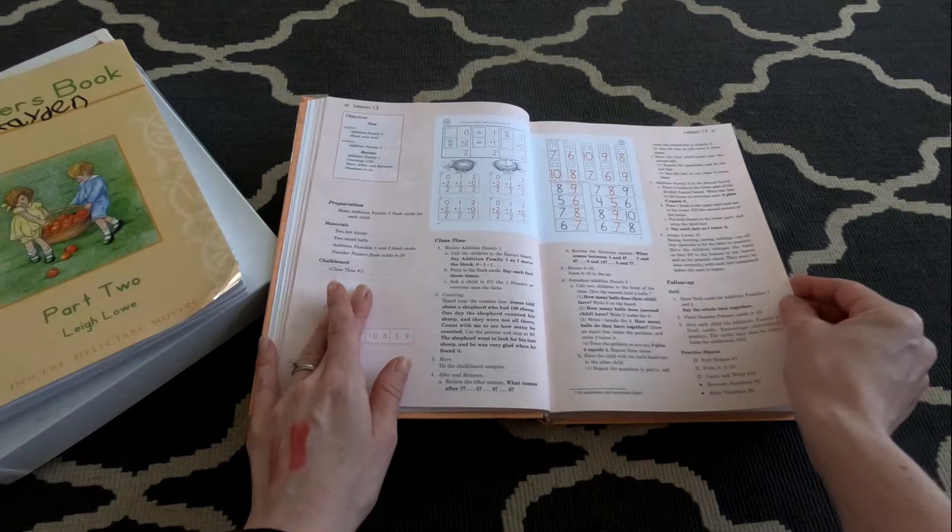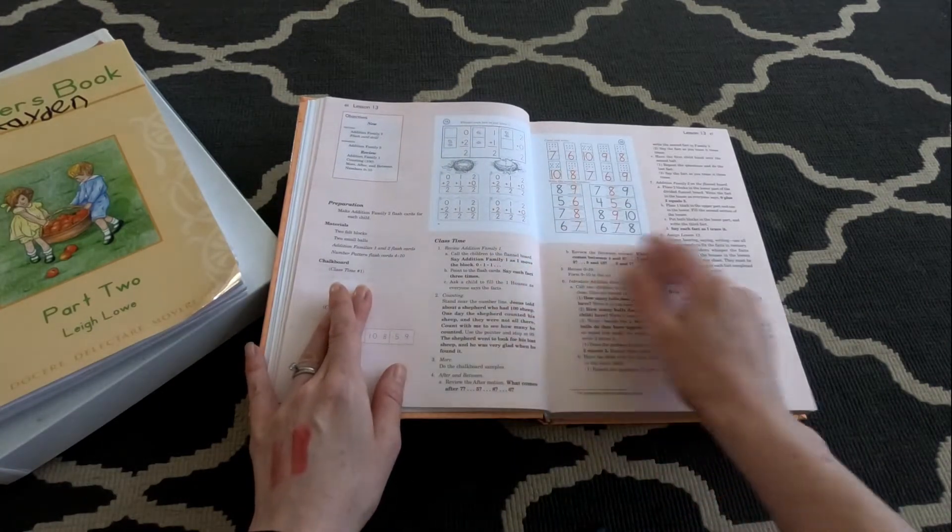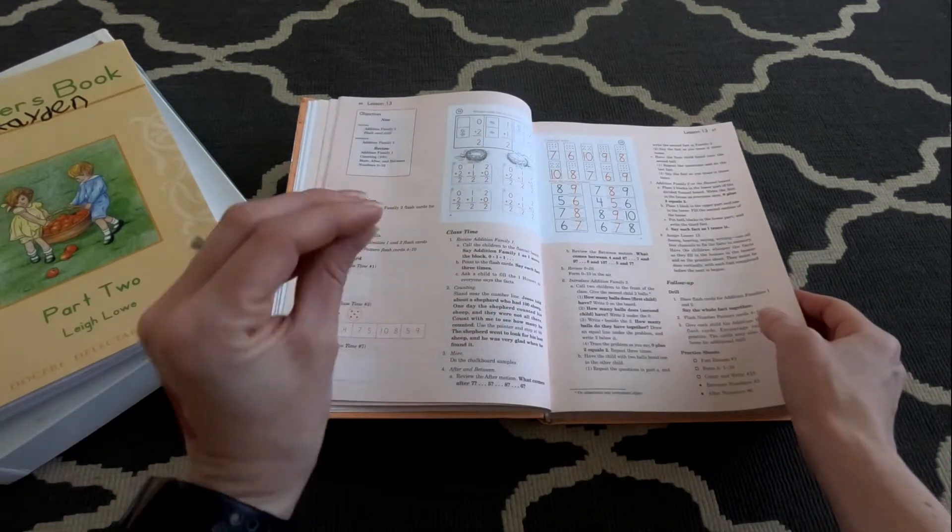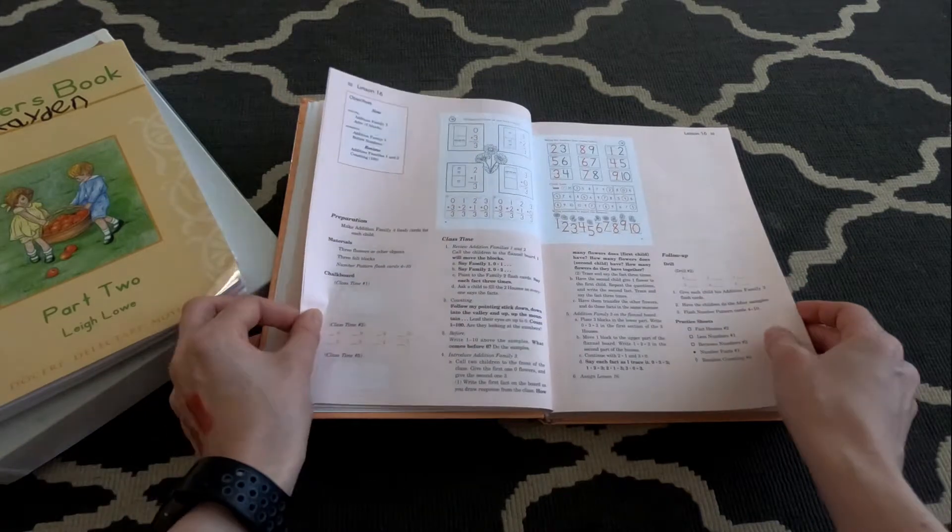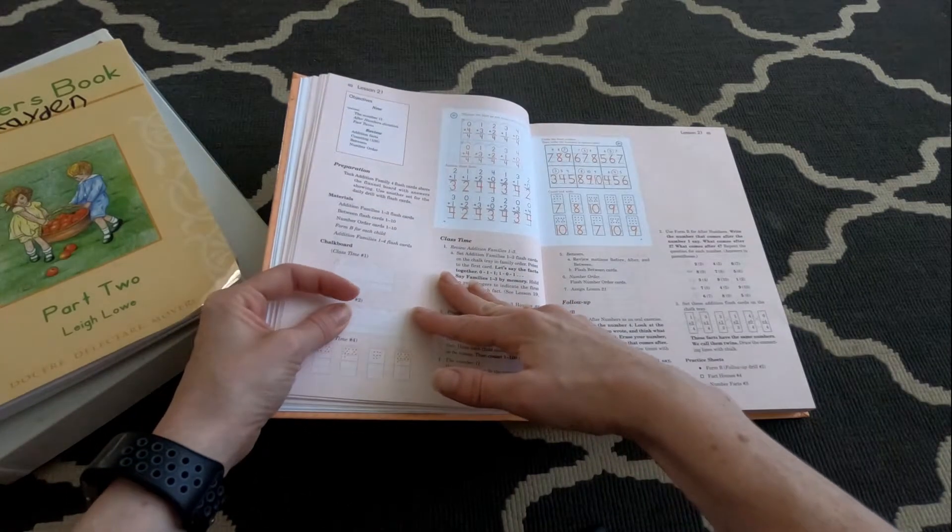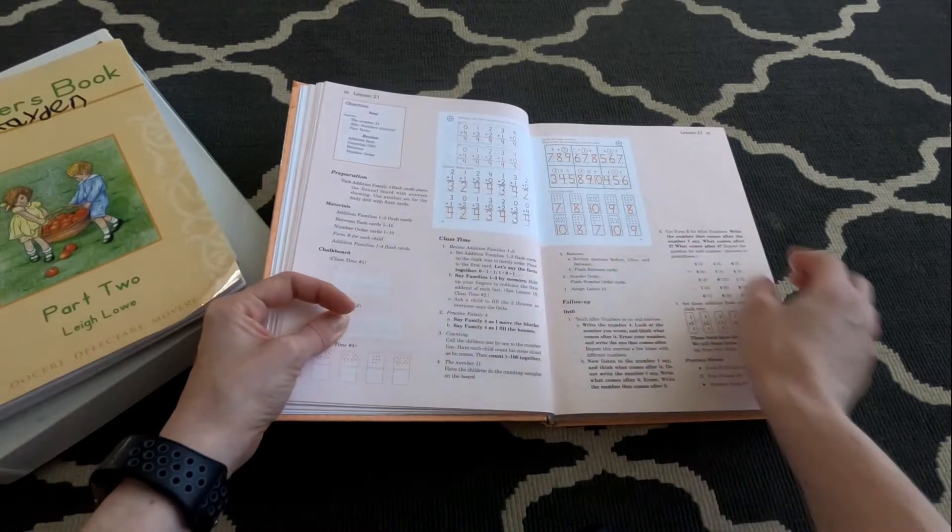And so they're drilling not only addition facts, but number order, less, more and less numbers to make sure that your child really understands their numbers. So they go through, I want to say maybe seven, up to seven or ten addition. And then they also go through subtraction later on in the book.